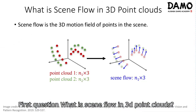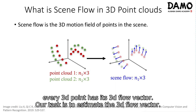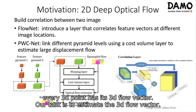First question: what is scene flow in 3D point clouds? As we can see from the figure, scene flow is the 3D motion field of points in the scene. Every 3D point has its 3D flow vector, and our task is to estimate that 3D flow vector.